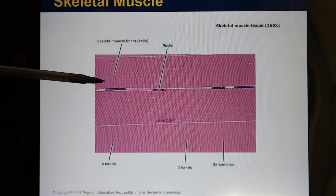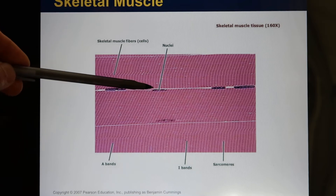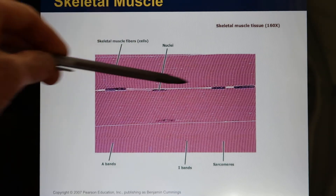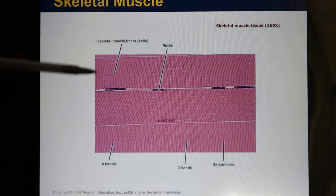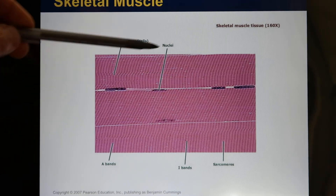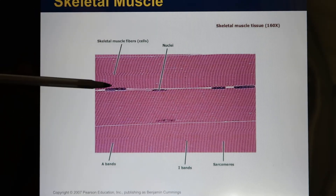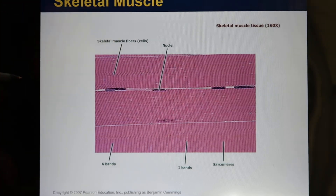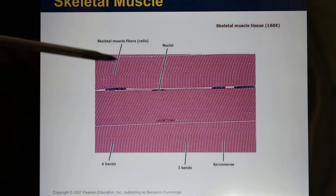The second characteristic: their nuclei are pushed to the side. It's very difficult to identify where one cell ends and another begins because they all fuse together. So their nuclei are pushed to the side. When we talk about muscle, we usually call them muscle fibers, because they fuse together.